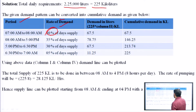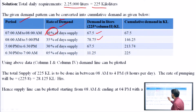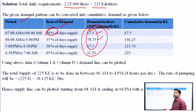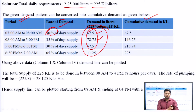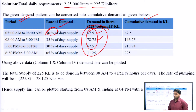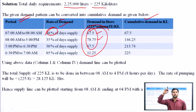Now computing cumulative demands: the first value is 67.5 KL; the second is the sum of 67.5 + 78.75 = 146.25 KL; the third is the sum of all three values = 213.74 KL; and the fourth cumulative value = 225 KL. We plot these cumulative demand values against time to get the demand line. For the supply line, the pump operates for 8 hours (8 AM to 4 PM). Rate of pumping = 225 ÷ 8 = 28.125 KL per hour.